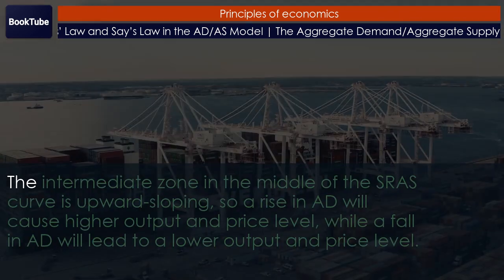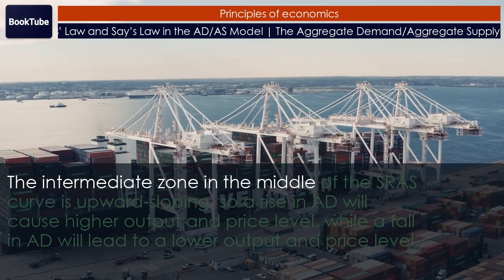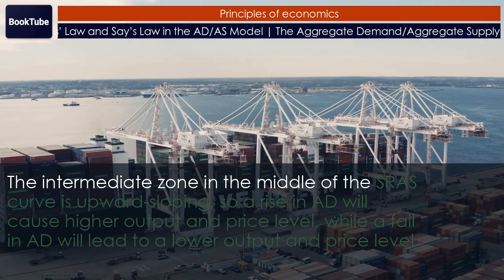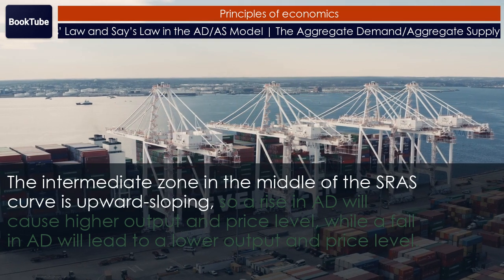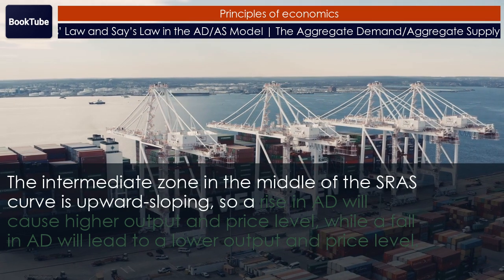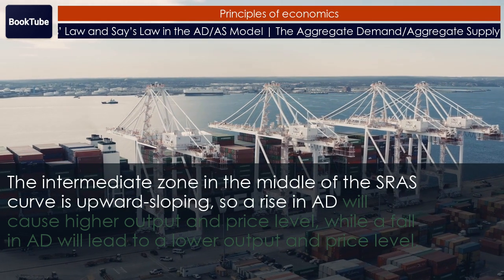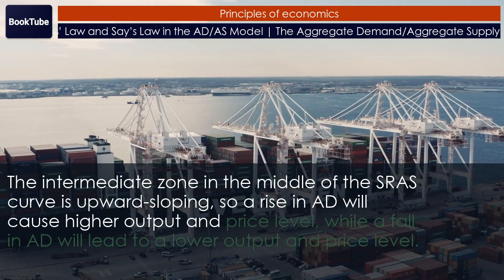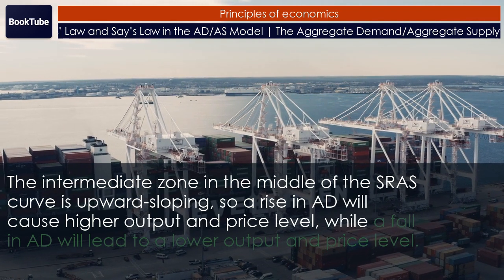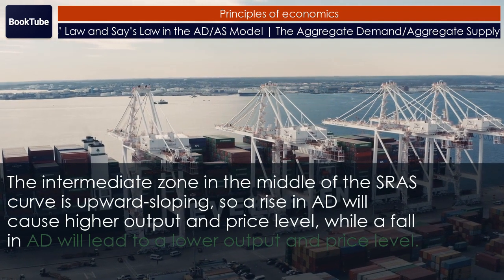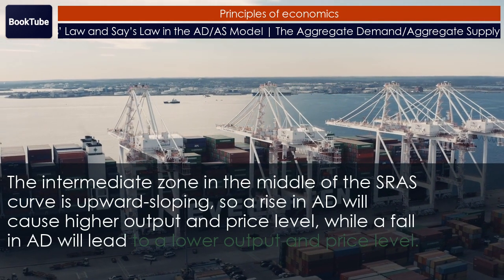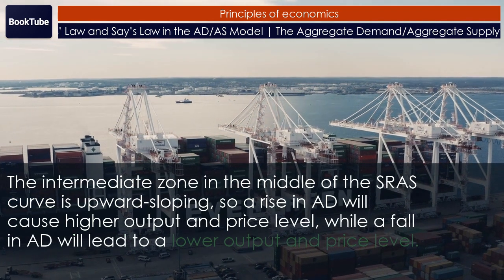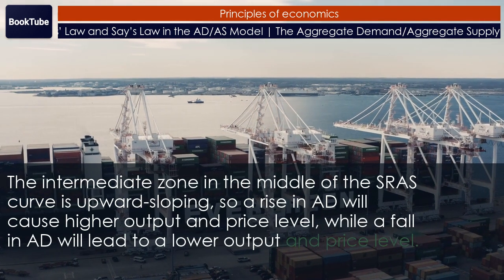The Intermediate Zone in the middle of the SRAS curve is upward-sloping, so a rise in AD will cause higher output and a higher price level, while a fall in AD will lead to lower output and a lower price level.